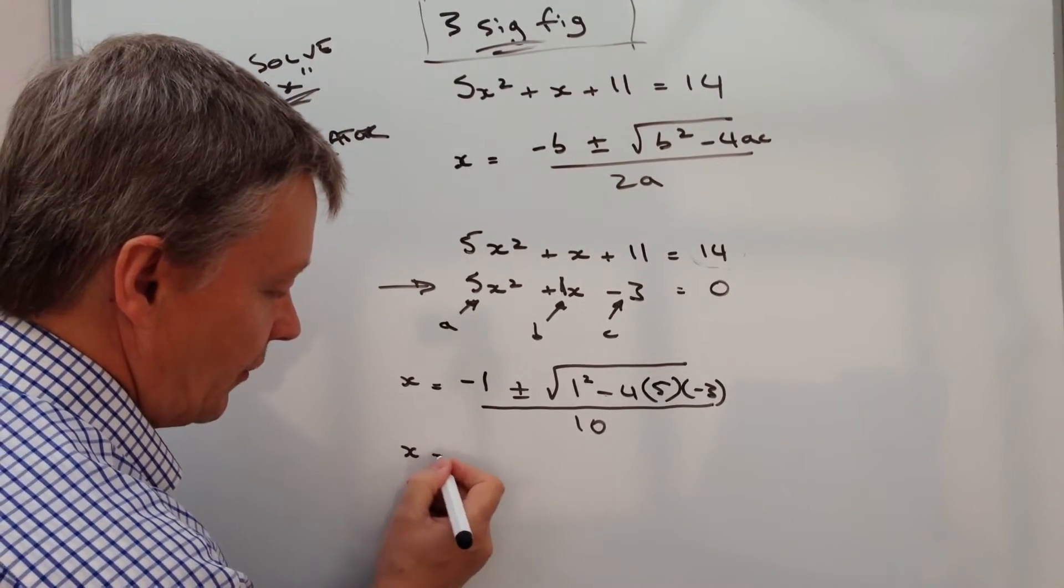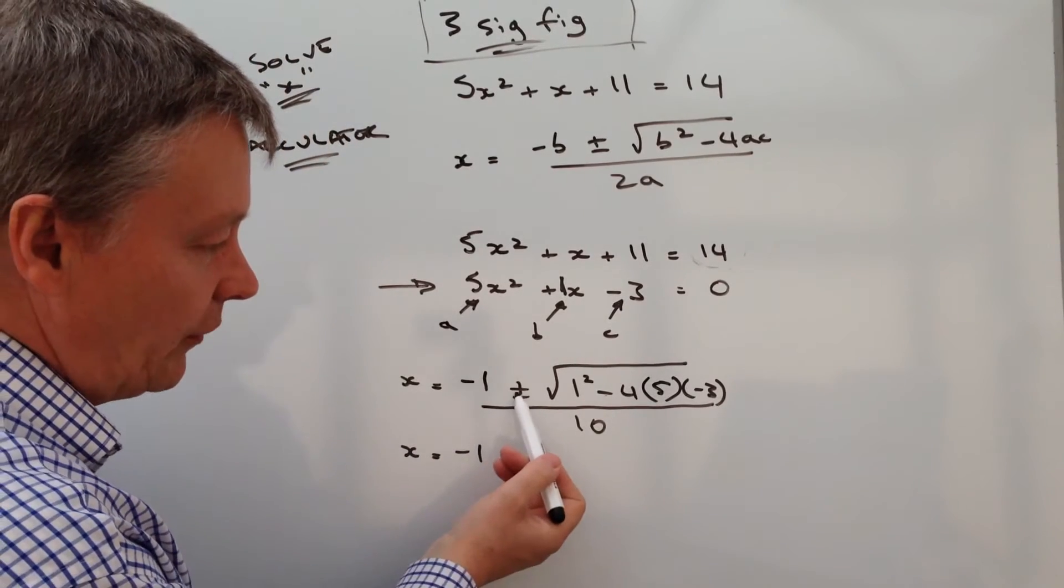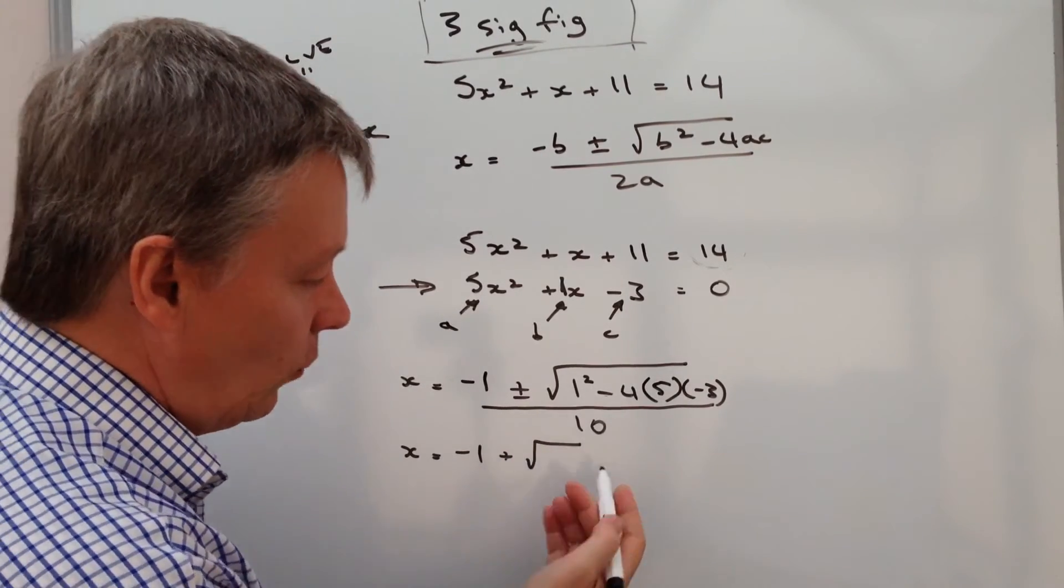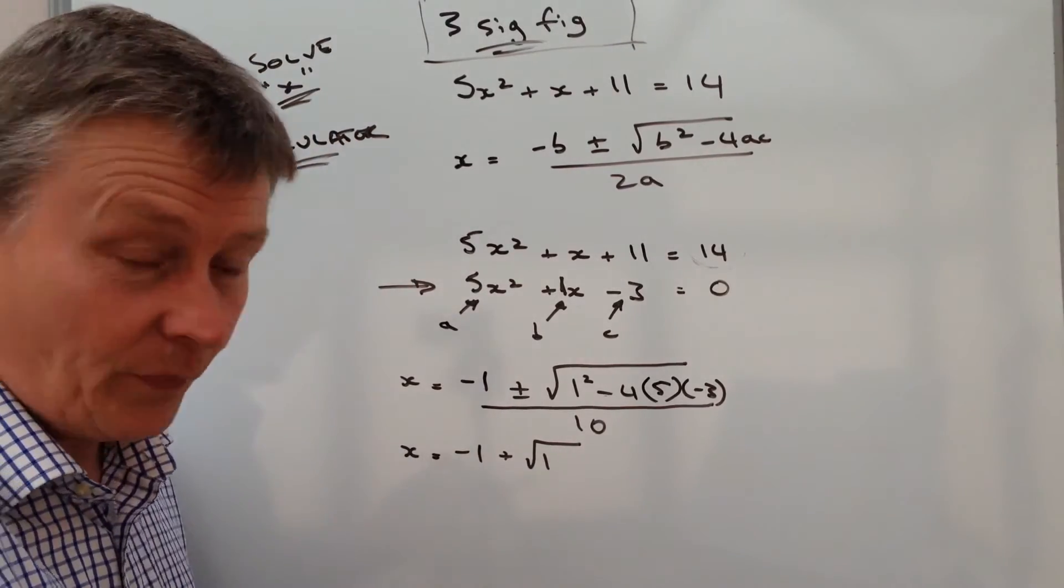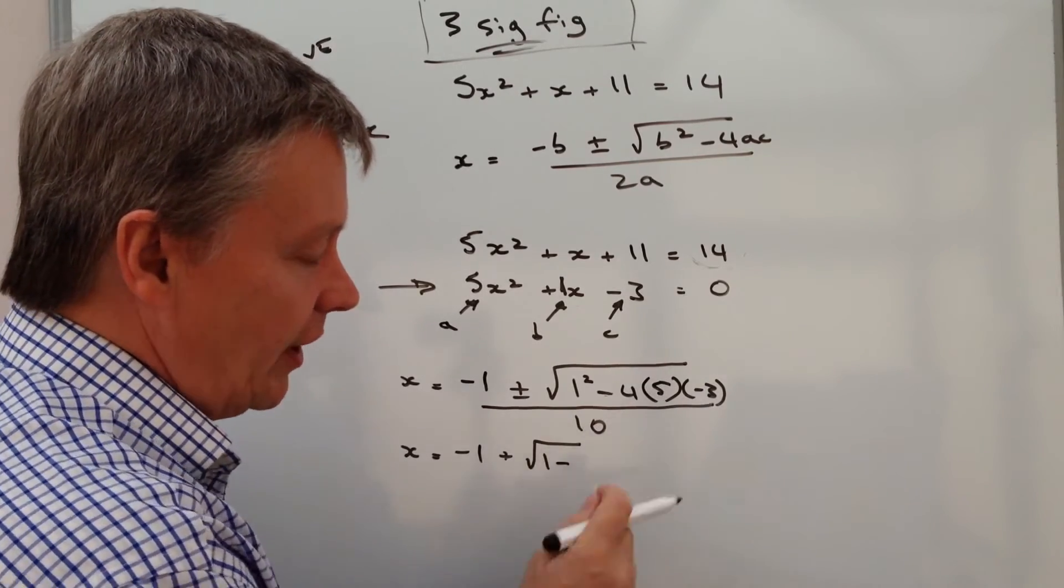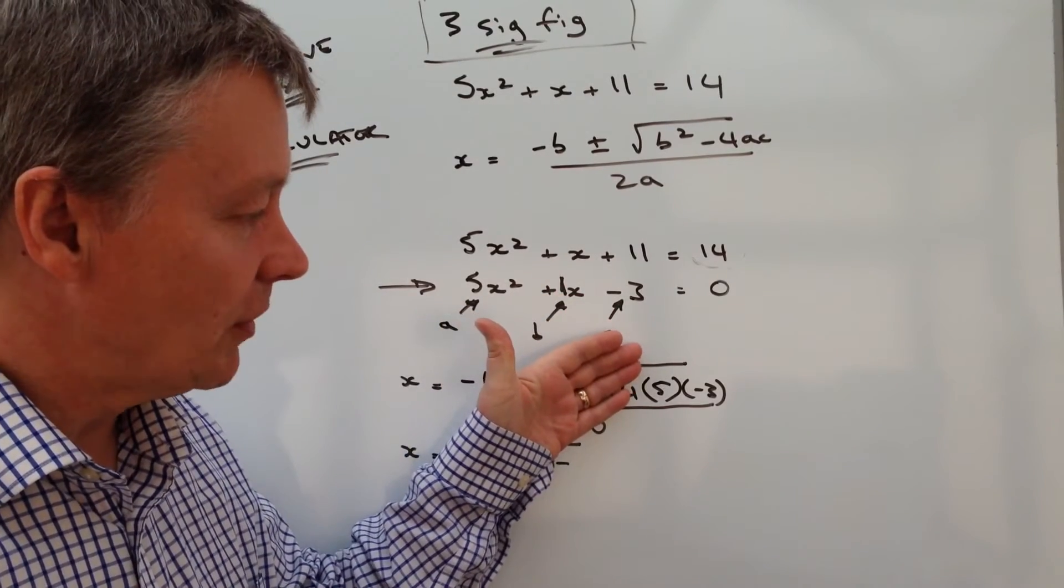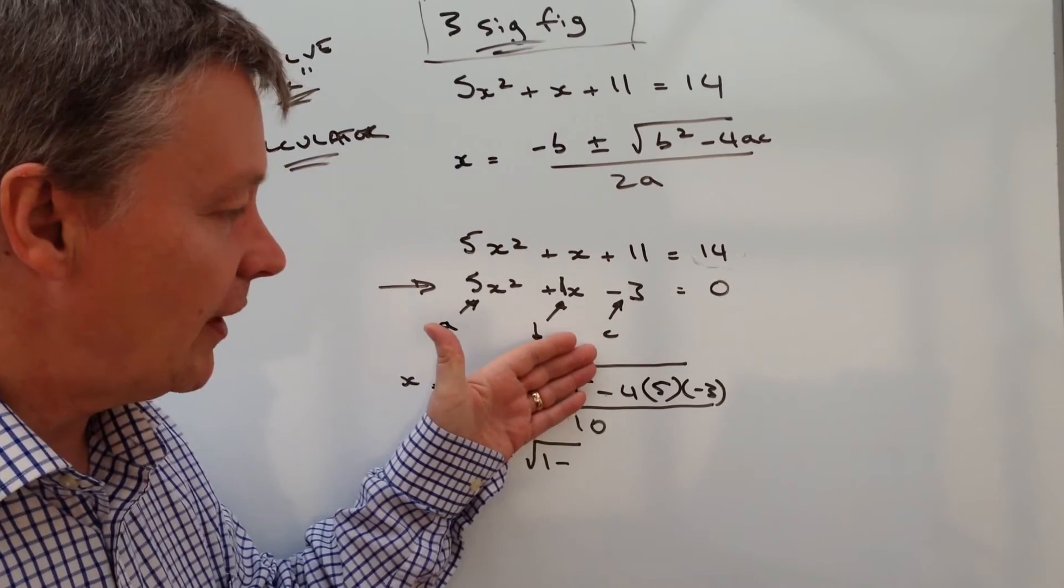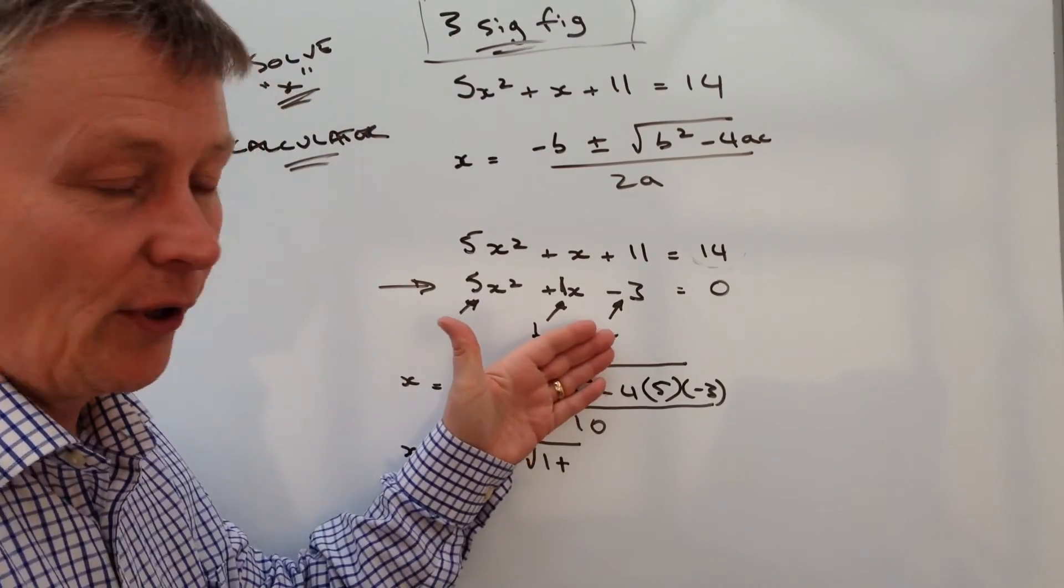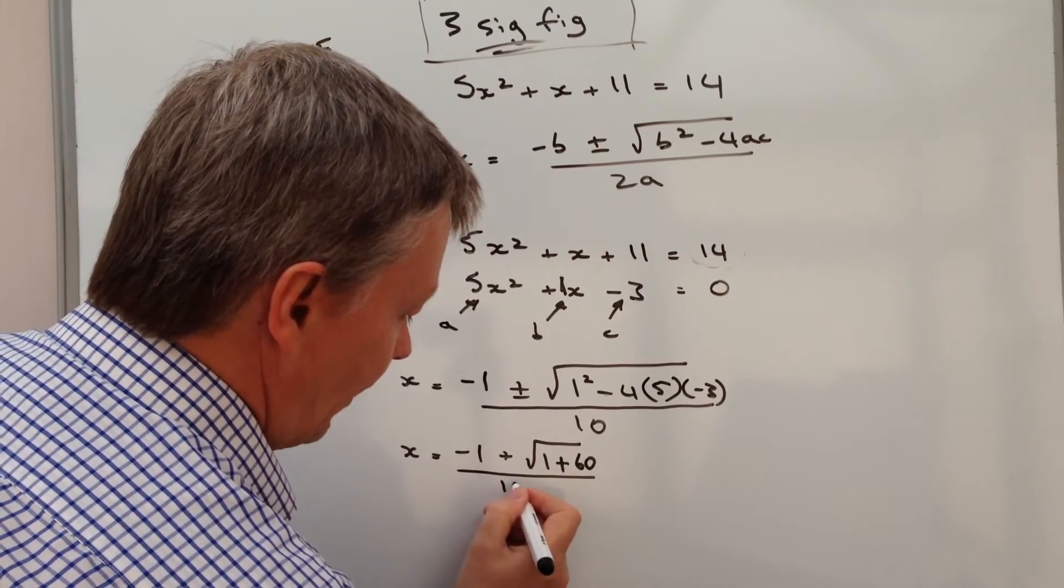What we end up with is two values. We've got x equals minus 1 plus the square root—I'm just going to go through this again. I've got 1², which is just 1, and then I've got minus 5 times minus 3. So forget everything else, 5 times minus 3 is minus 15. Then I'm going to multiply that minus 15 by minus 4. Minus times a minus is a plus and it's going to be 4 times 15, which is 60, and I'm going to divide that by 10.